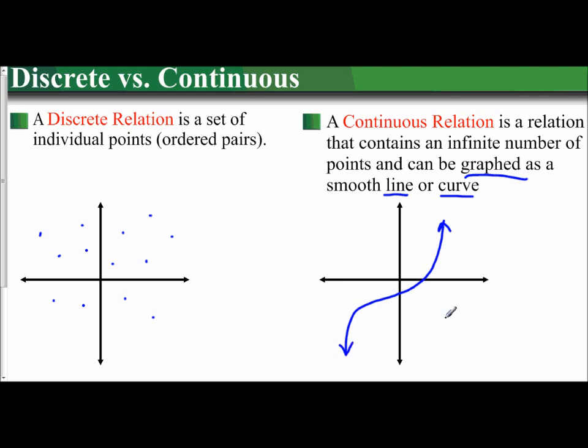So a continuous relation is going to be either a graph that's got a curve to it with arrows on the end, or a smooth line, whereas a discrete relation has a beginning, has an end. It's a set of points that can be graphed. You can count the total number of points. But when you have a line or a curve, it's an infinite number. It's continuous, it cannot be counted. That is the difference between a discrete relation and a continuous relation.